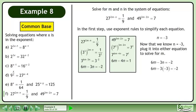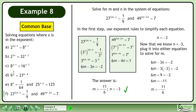Plug in negative 3 for n. Simplify. Isolate 6m on the left side. Divide both sides by 6 to get m equals negative 11 over 6. The answer is m equals negative 11 over 6 and n equals negative 3.